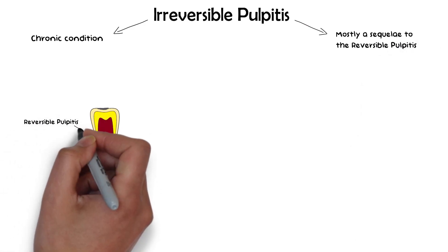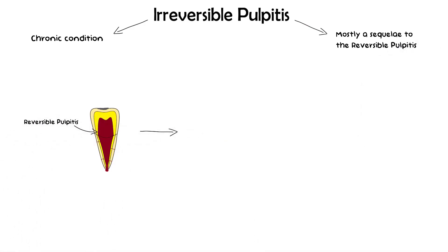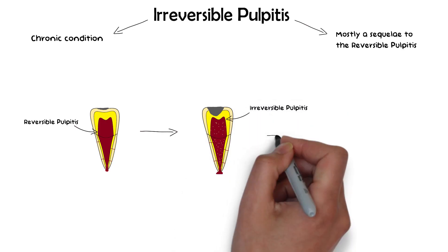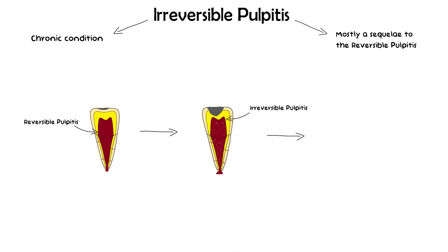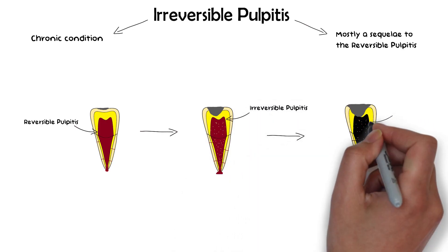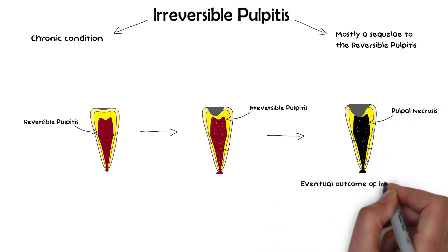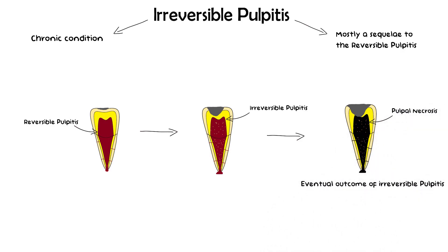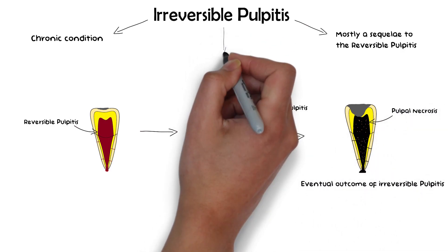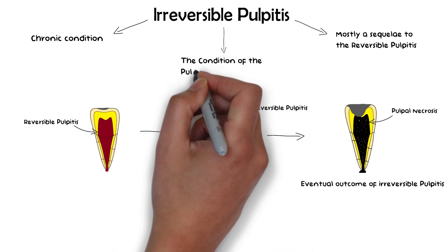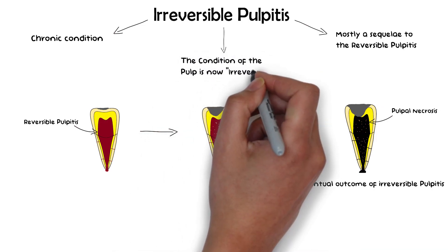Irreversible pulpitis is a severe inflammatory condition in which the pulp will eventually progress to necrosis regardless of whether the cause of inflammation is removed or not. Hence, the name irreversible, because the condition of the pulp is now essentially irreversible.